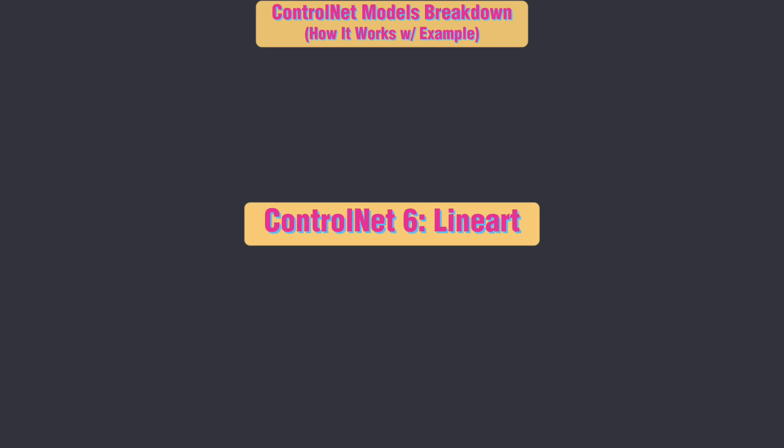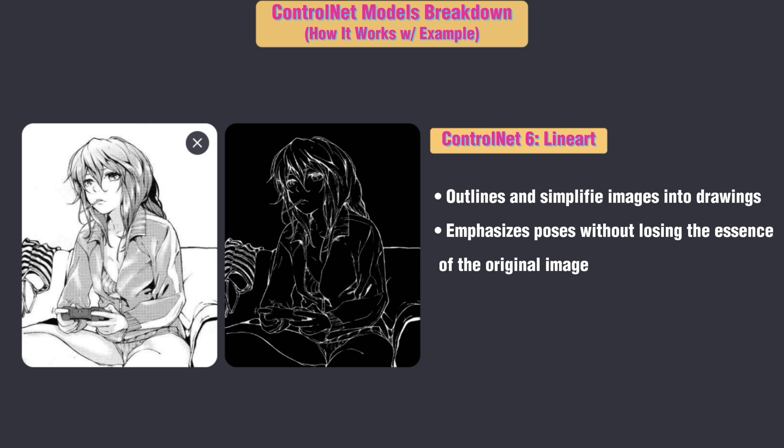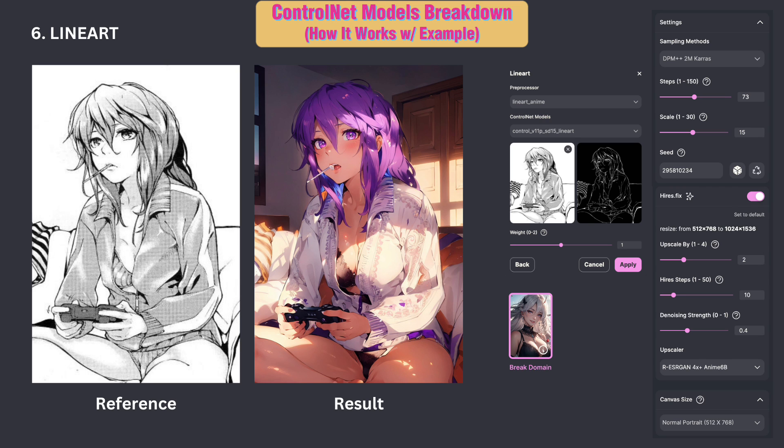ControlNet 6: Line Art. It outlines and simplifies images into drawings, transforming them into intricate drawings that emphasize poses without losing the essence of the original image. Here is an example of turning black and white line art into anime art with vivid color. How awesome!